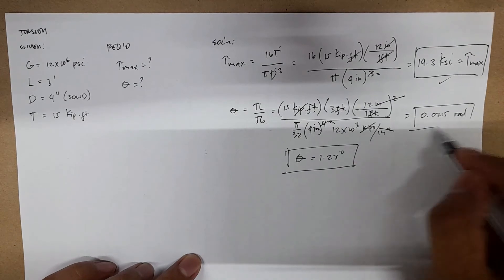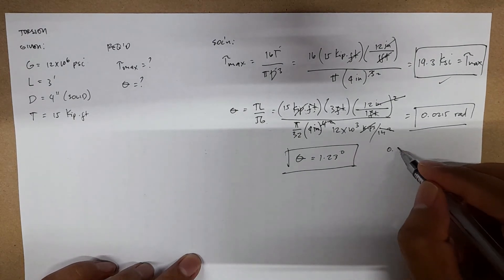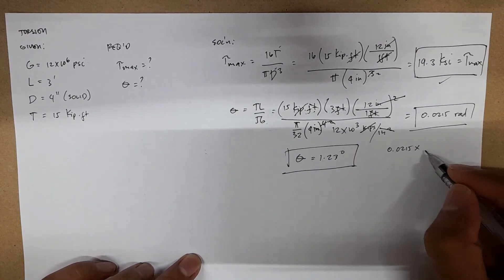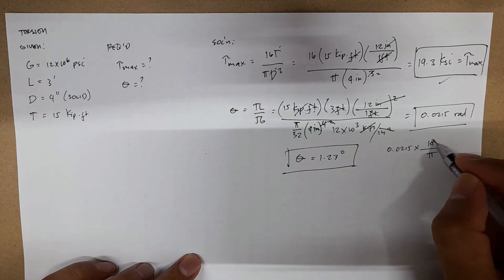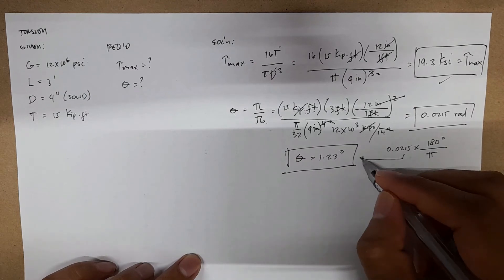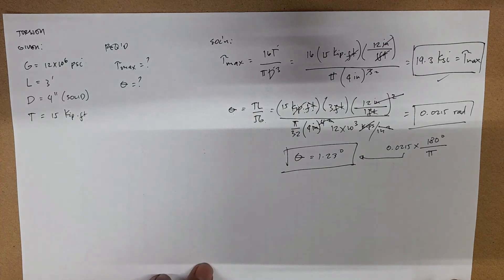How do you get this in degrees? You just have to multiply by π over 180 degrees. We will arrive at this answer.